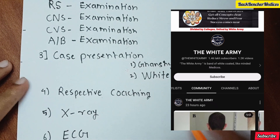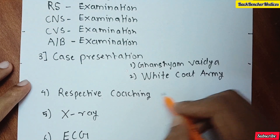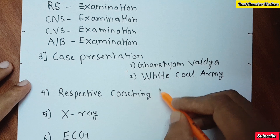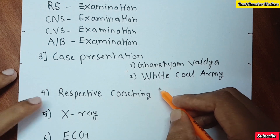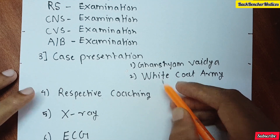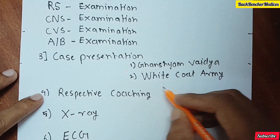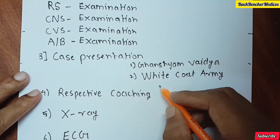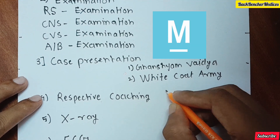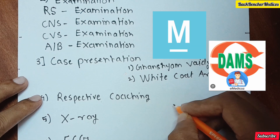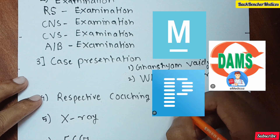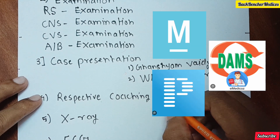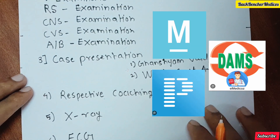The fourth step is respective coaching. You have to go through your respective coaching notes — that could be Marrow, DAMS, or Tapladder, whichever you are using.